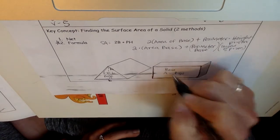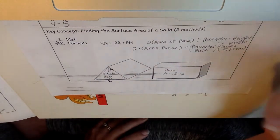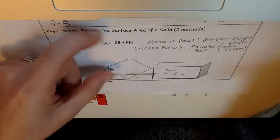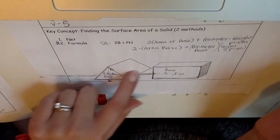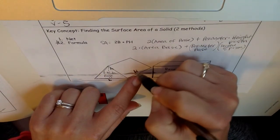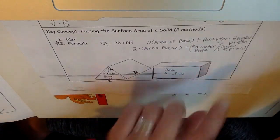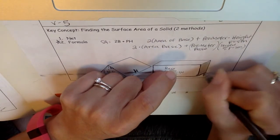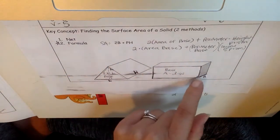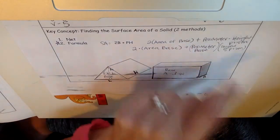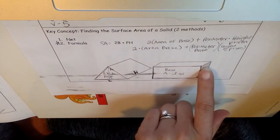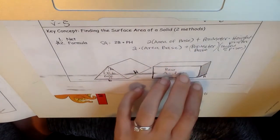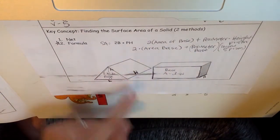For a rectangular base, the area is length times width. The height of the prism is how tall the prism is if you stood it up on its base. For a triangular prism, you visualize standing it on the triangle — the height would be that vertical measurement, which is the capital H in our formula. For rectangular prisms, any rectangle could be the base, but for triangular prisms, the triangle is always the base.